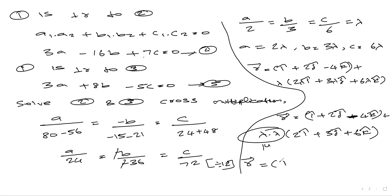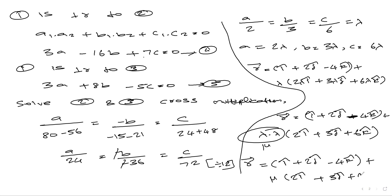Final answer: R vector = (i-cap + 2j-cap - 4k-cap) + μ(2i-cap + 3j-cap + 6k-cap).